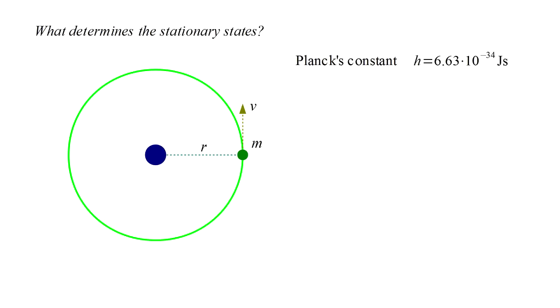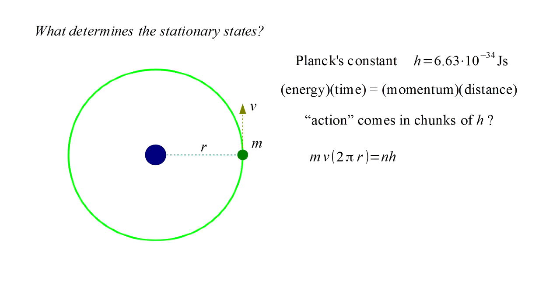Now Bohr proposes a way to determine which orbits form discrete stationary states that can exist without suffering radiation collapse. We've seen that Planck's constant is at the heart of quantum theory. It has units of energy times time, which are the same units as momentum times distance. This combination of units is important in classical physics and is called action. Since Planck's constant has units of action, maybe action comes in discrete chunks of size h. The action of a circular orbit is the momentum m times v times the distance around the orbit circle, two pi r.